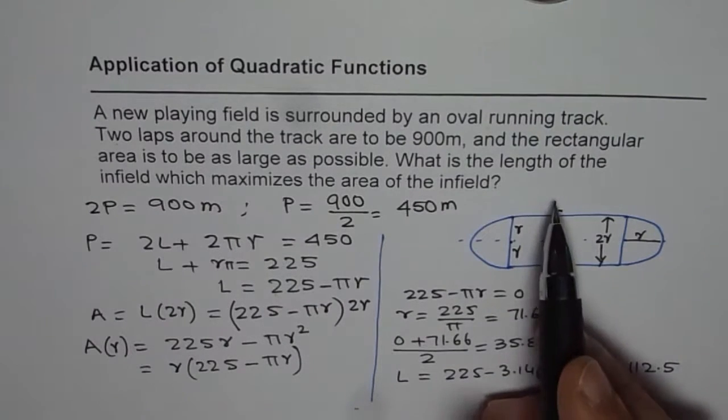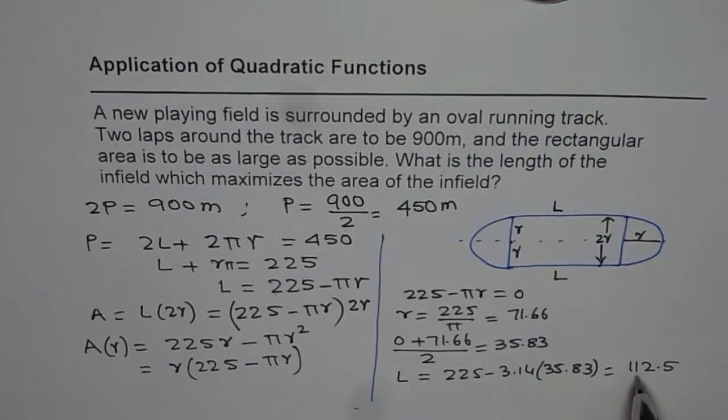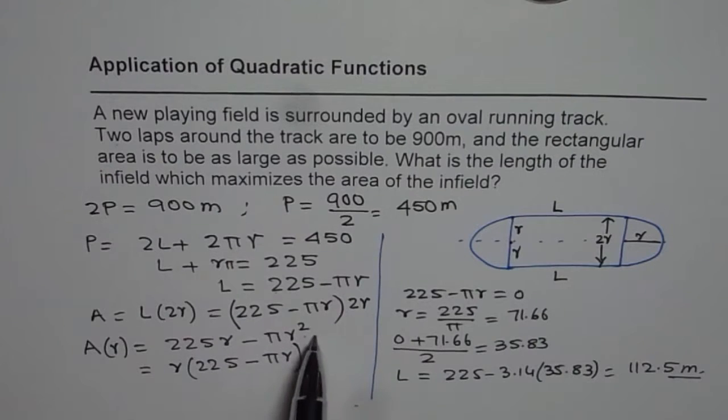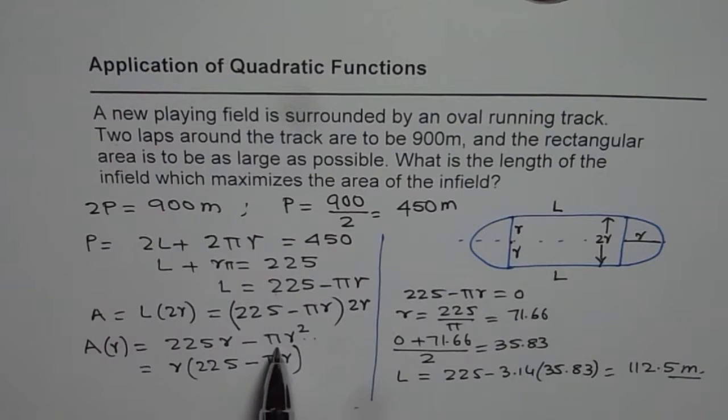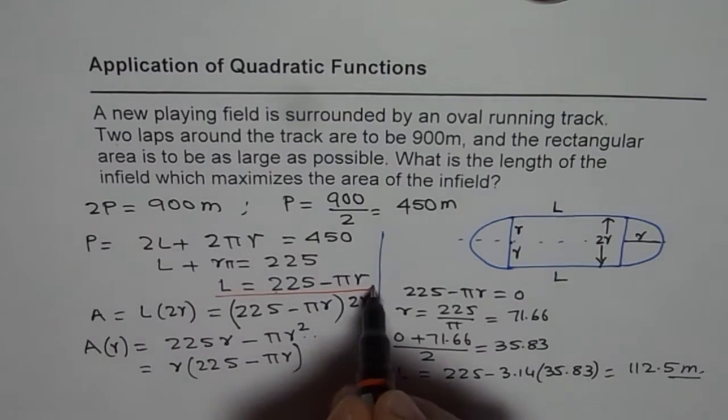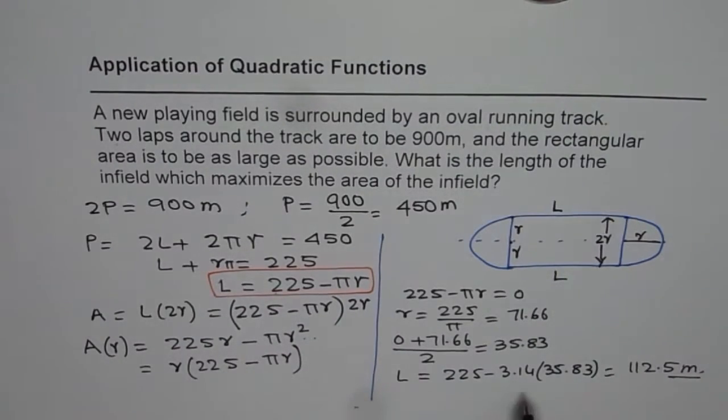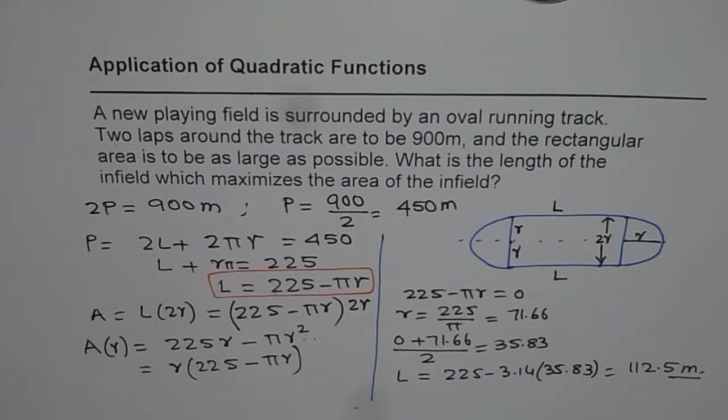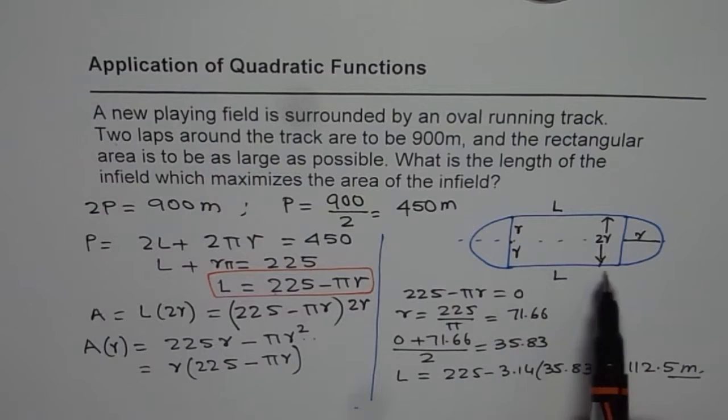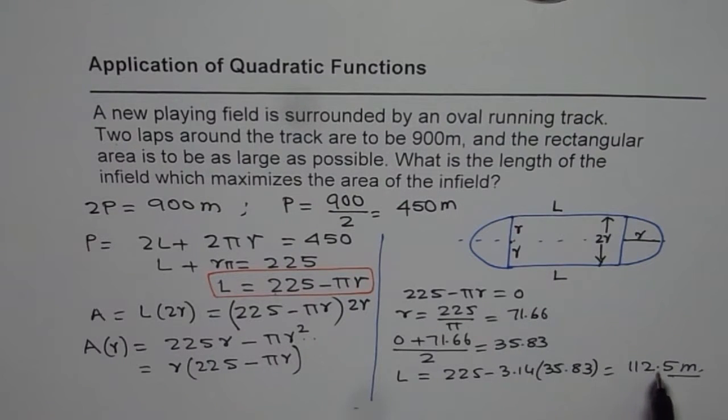So approximately the length of this field could be 112.5 meters. So that is one way of doing it. The other way is you could do completing the squares from here and then find R. Once you find the value of R, substitute in the relation which we have developed between the length and the radius. And then write down your answer. So in this particular case, we get that the dimension of the length of the field is approximately 112.5 meters. I hope that helps. Thank you.